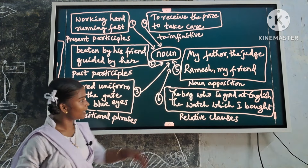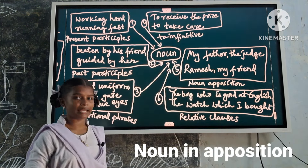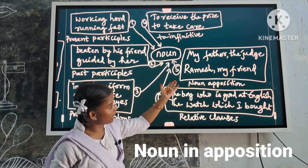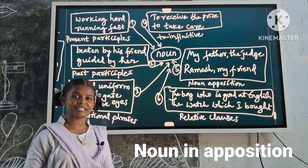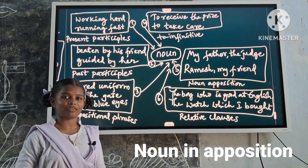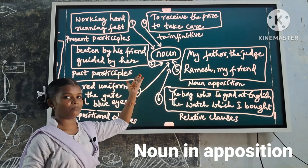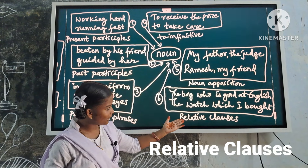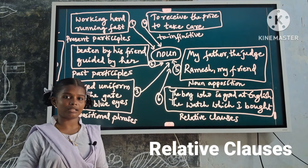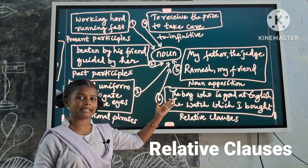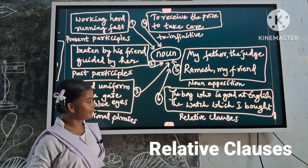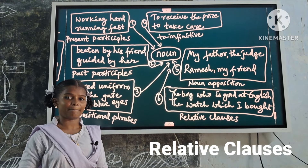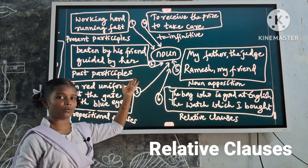Next one: noun apposition. Examples: my father the judge, Ramesh my friend. These are noun modifiers because they describe the noun. Next one: relative clauses. Examples: the boy who is good at English, the watch which I bought. These are noun modifiers because they describe the noun.